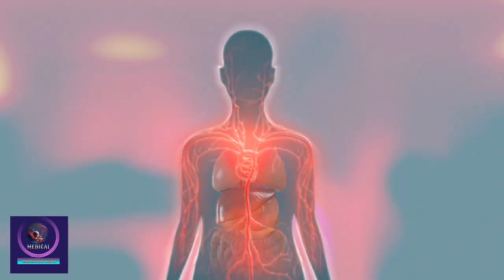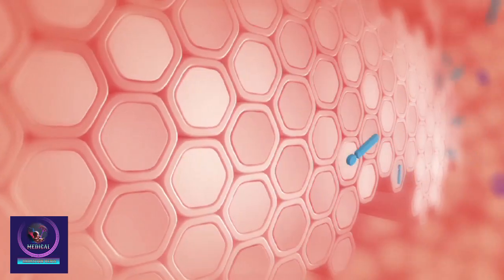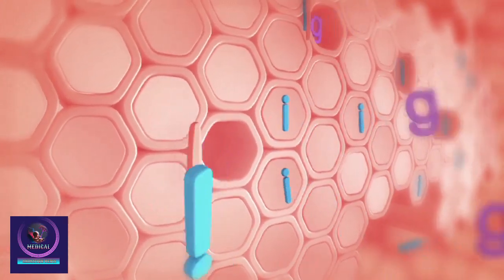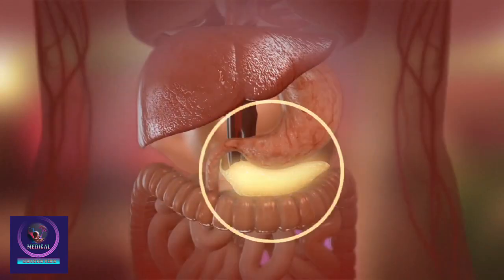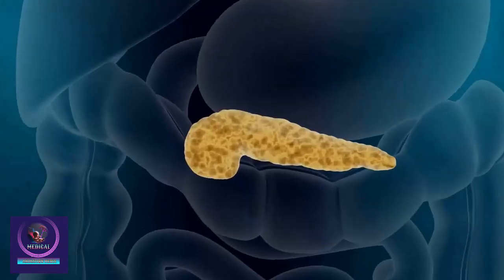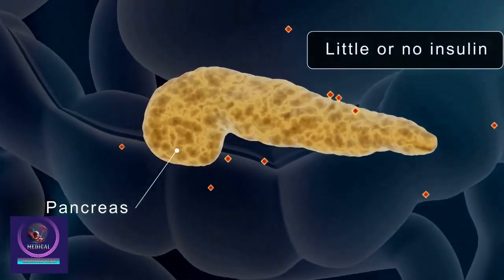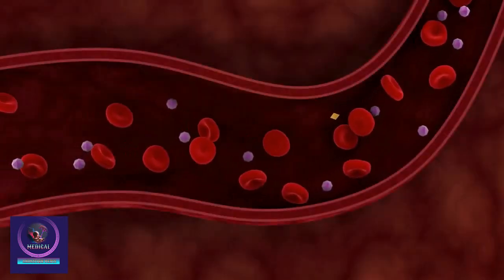Glucose can't get inside the cells without a hormone called insulin. Insulin acts like a key that opens the door to the cell, allowing the glucose to enter. Insulin is produced by the pancreas. Diabetes develops because your pancreas does not make enough insulin, or the body does not respond to the insulin it has produced.